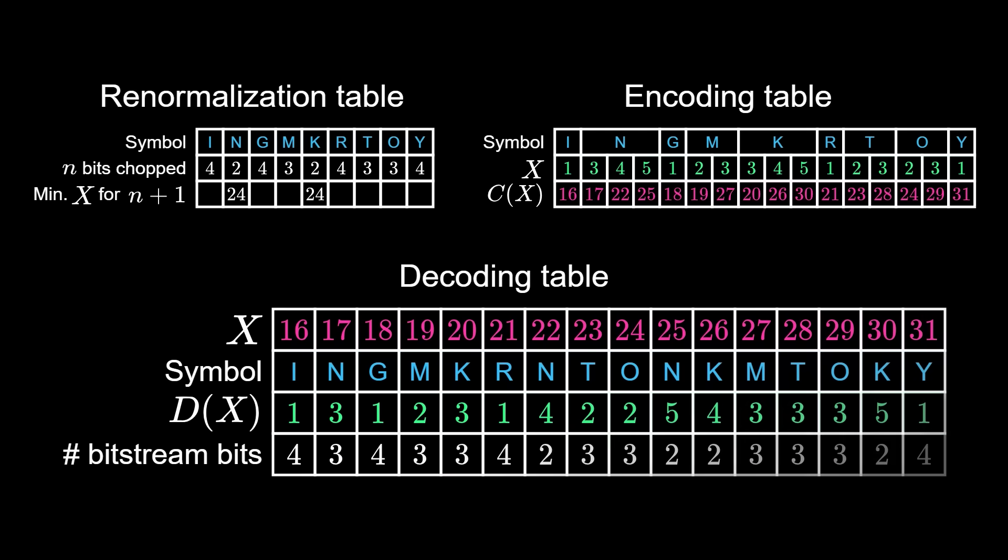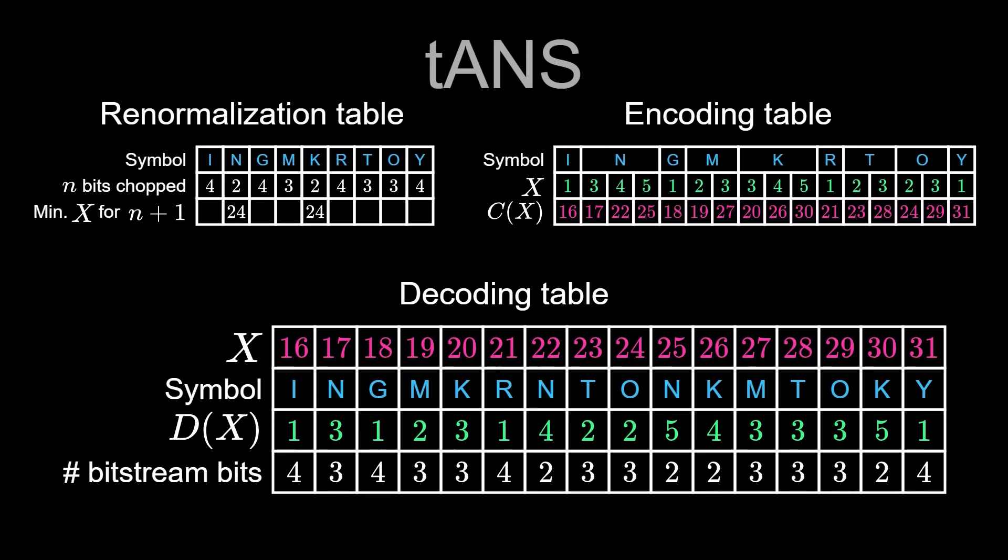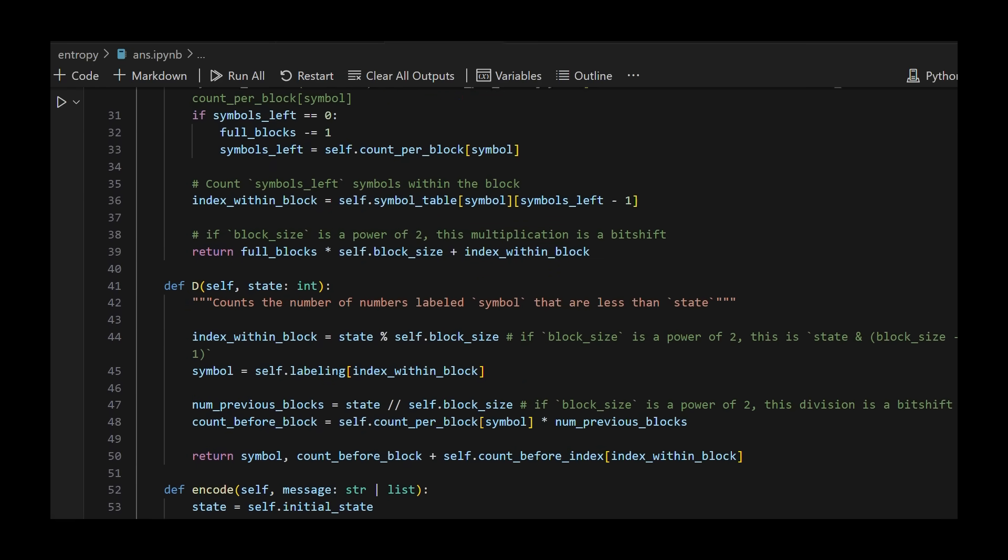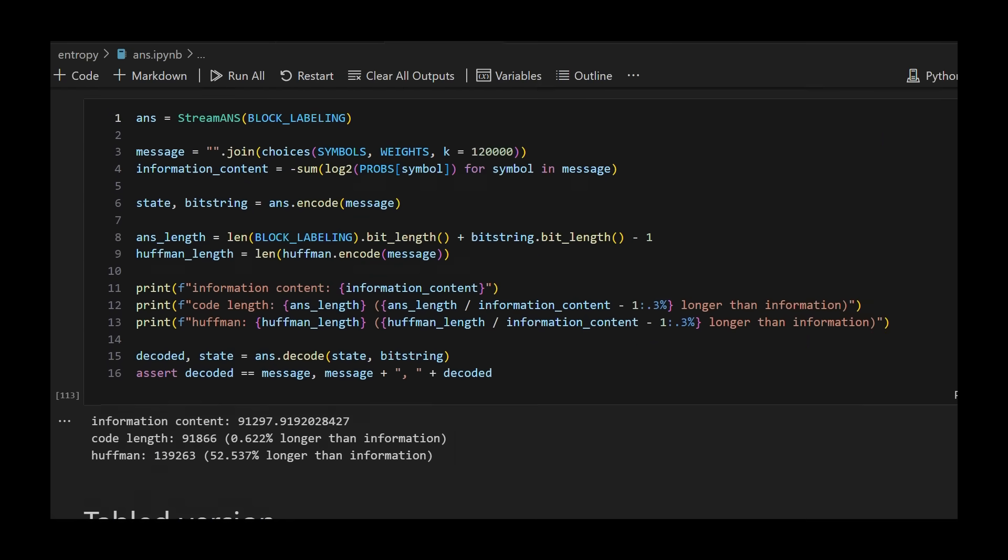The final, brilliant thing about ANS is that this entire algorithm can be condensed into a set of tables. Everything. Encoding, renormalization, decoding is done with just a couple references to these tables, which makes tabled ANS super fast, with compression rates comparable, depending on your labeling, to arithmetic coding, which is slow. I've linked to my Python implementation in the description if you want to see details.